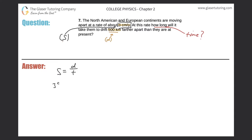So let's plug in three centimeters per year for the speed. And then the distance they gave us was 500 kilometers divided by time, which I'm trying to find. Now here's the problem.